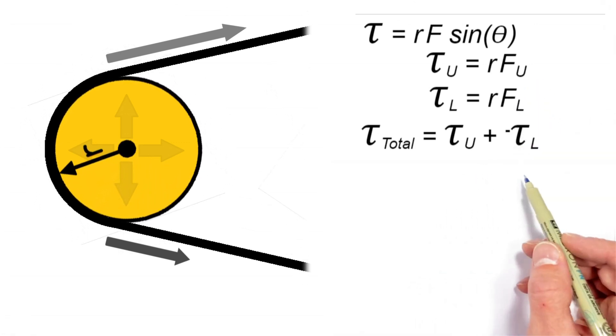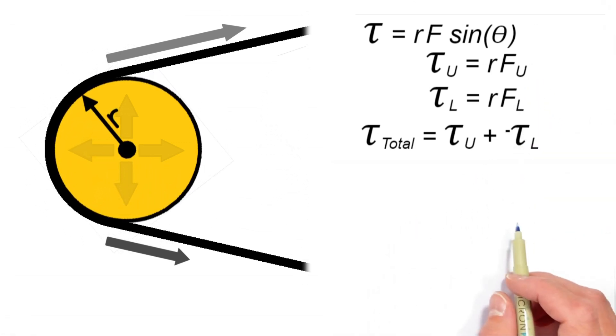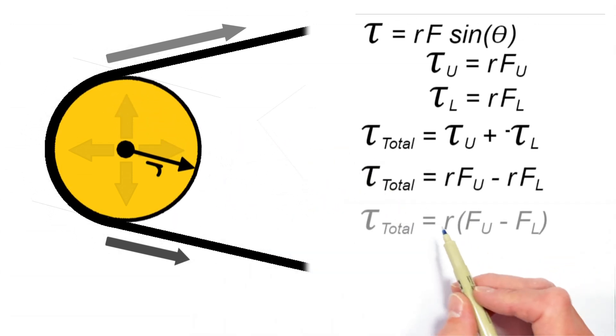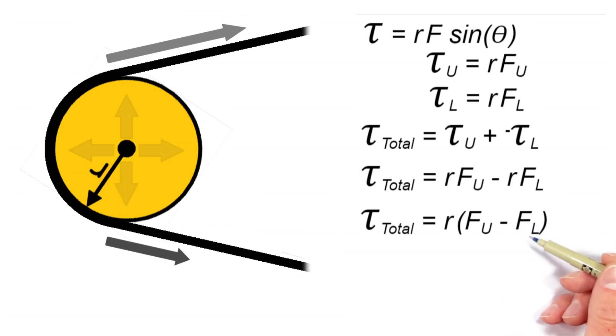Now using our equations for torque, we can sub those in, and we get this equation for the total torque which is produced on this pulley as a result of the two forces or tensions in the belt.